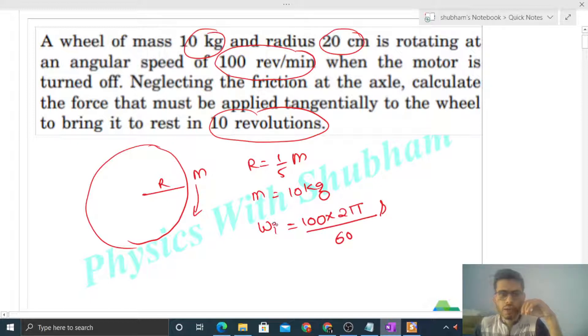Now we want the wheel to come to rest in 10 revolutions, means after rotating an angle of 10 into 2π radian it will finally come to rest.